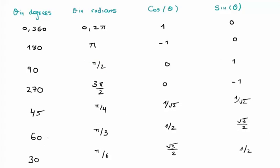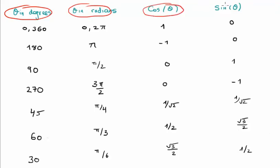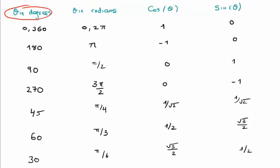Putting it all together, we can look at the angle in degrees, the angle in radians, the cosine of the angle, and the sine of the angle. All the results from the last few minutes are summarized in the table in front of you. And that's all I have to say about that.